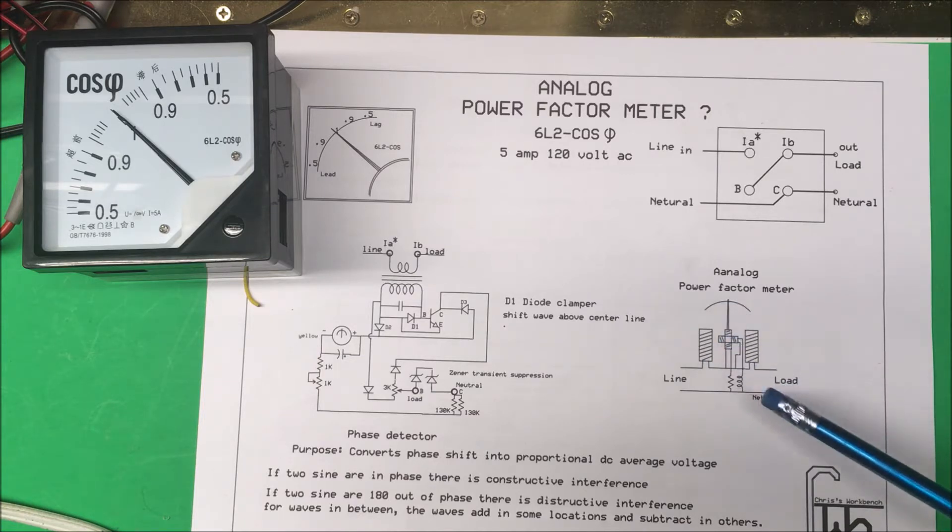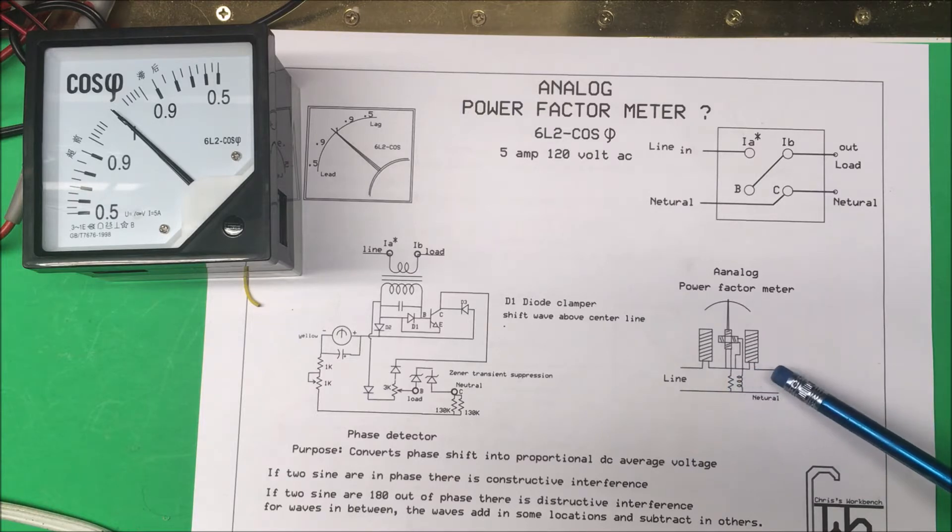One coil is fed with an inductor and the other is fed with a resistor. This inductor, I'd say at 60 hertz, has the same impedance as this resistor here.